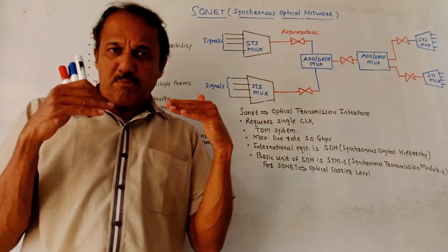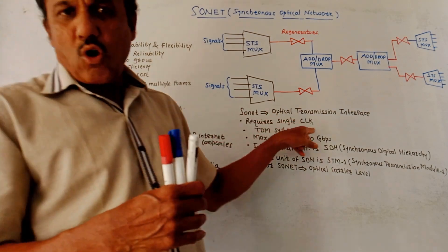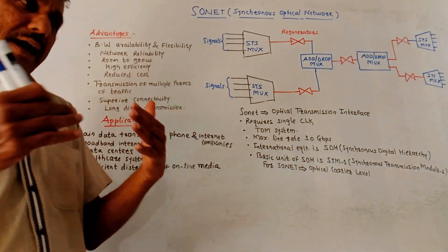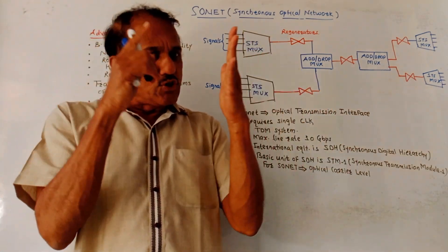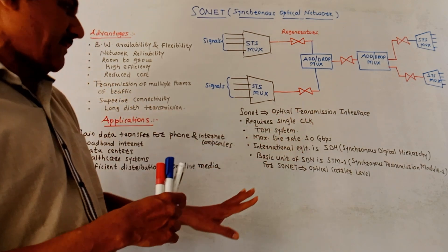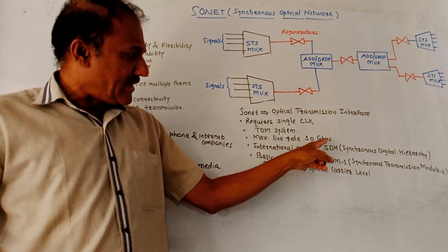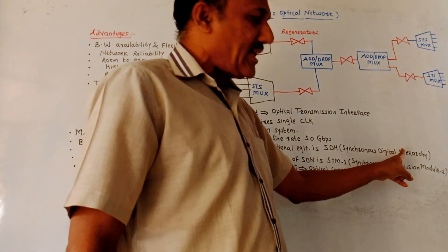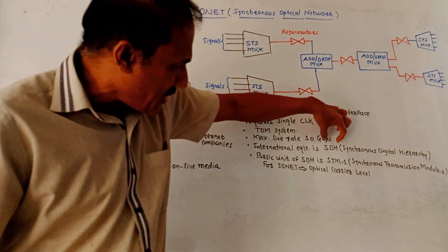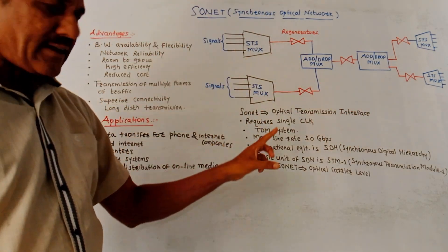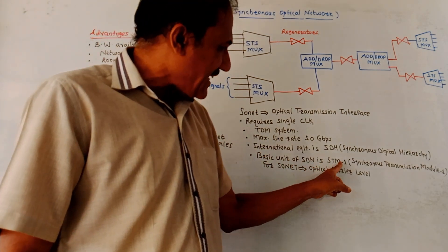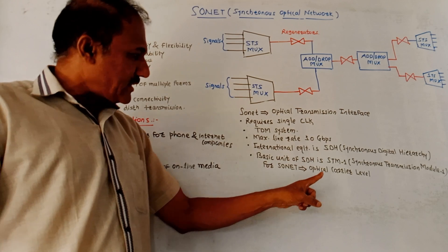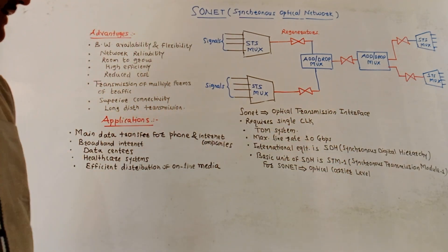Now, important parameters of this SONET are: it requires a single clock for timing synchronization and for other devices. Then it is basically a multiplexing system. I mean to say this is an optical interface which works with TDM, that is time division multiplexing system. The maximum line rate is 10 Gbps. International standard related to this SONET is SDH, that is synchronous digital hierarchy. Only difference between SDH, that is synchronous digital hierarchy, and SONET is that the basic unit of SDH is STM-1, that is synchronous transmission module 1. Whereas for SONET, the basic unit is optical carrier level, which is denoted by OC, optical carrier level.